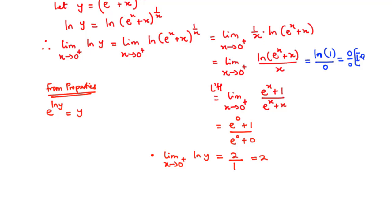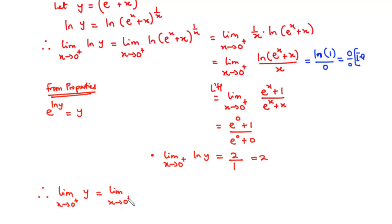Remember, we are interested in finding the limit of y, not the limit of ln y. From properties of the natural log, e to the power ln y equals y. So the limit as x approaches 0⁺ of y equals the limit as x approaches 0⁺ of e to the power ln y, which equals e to the power 2.